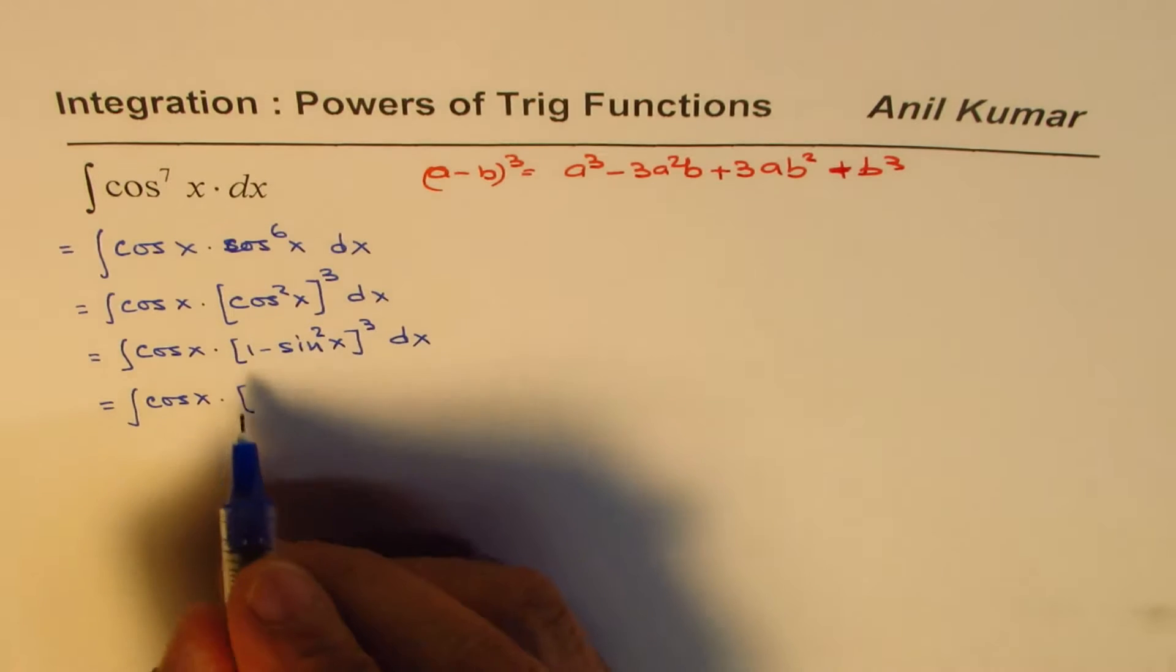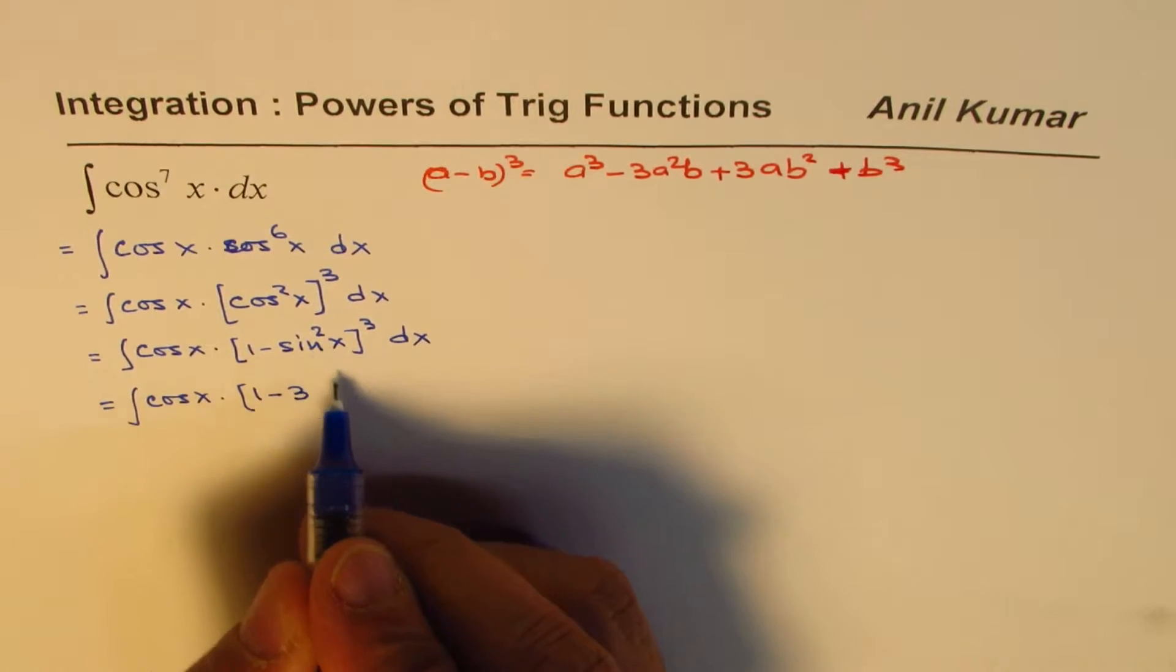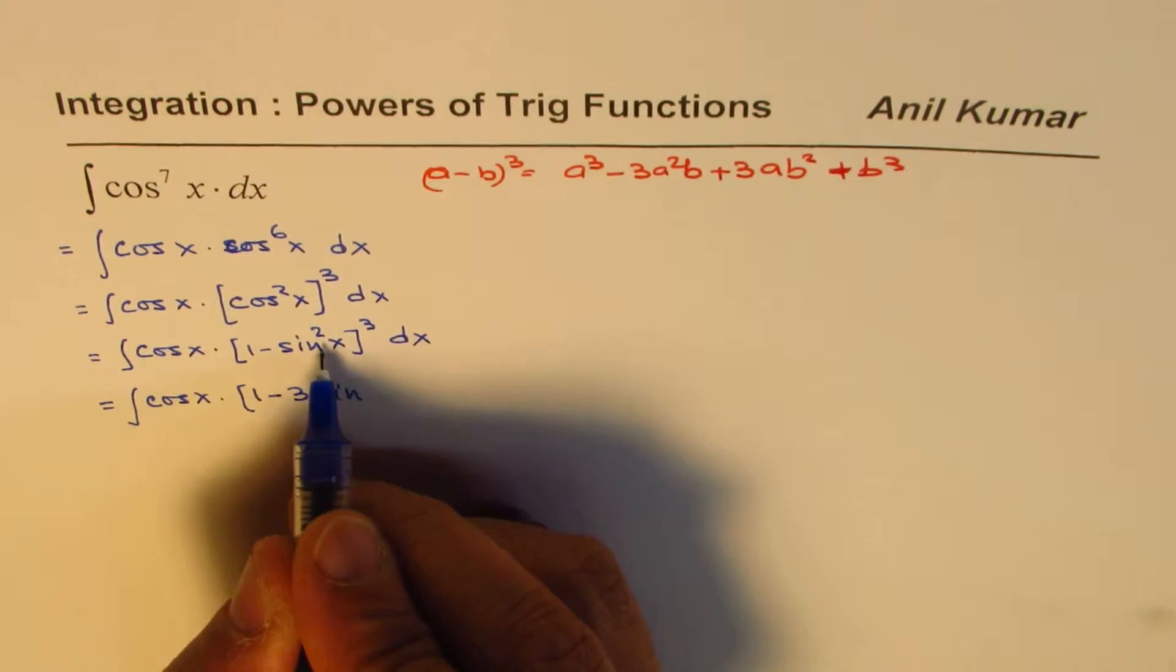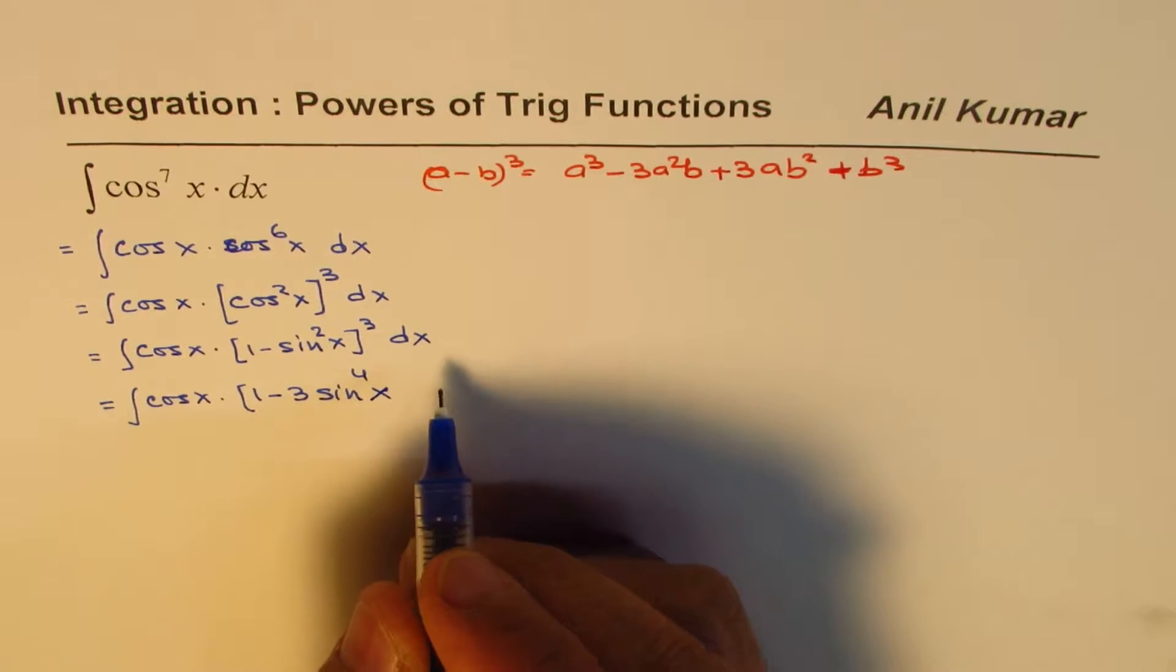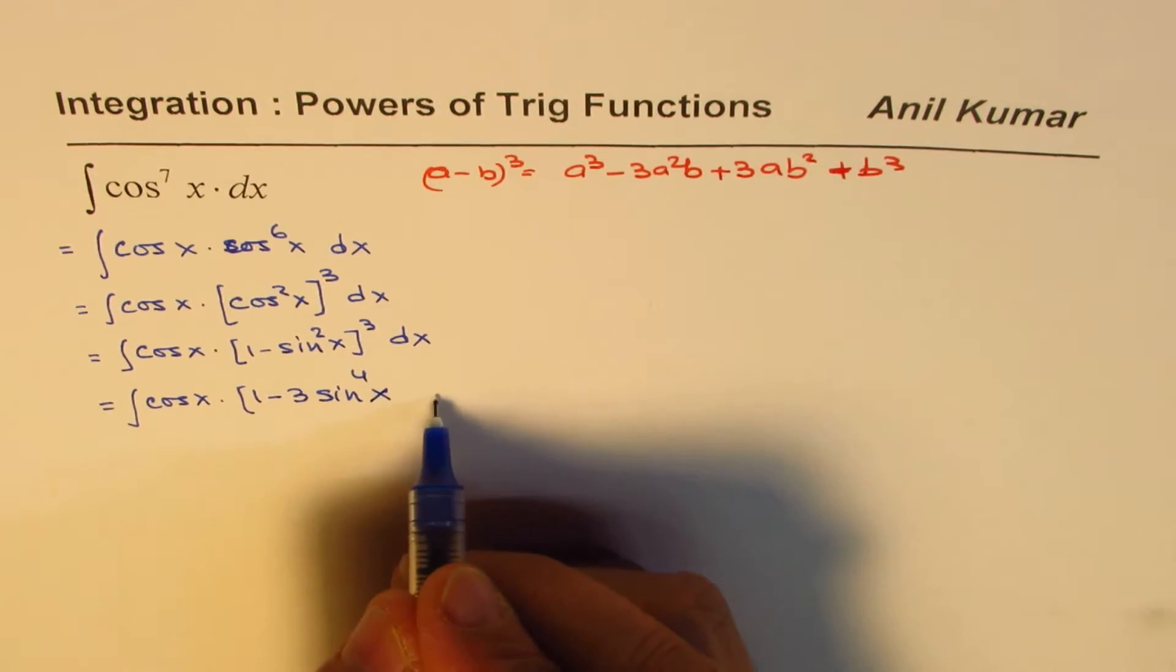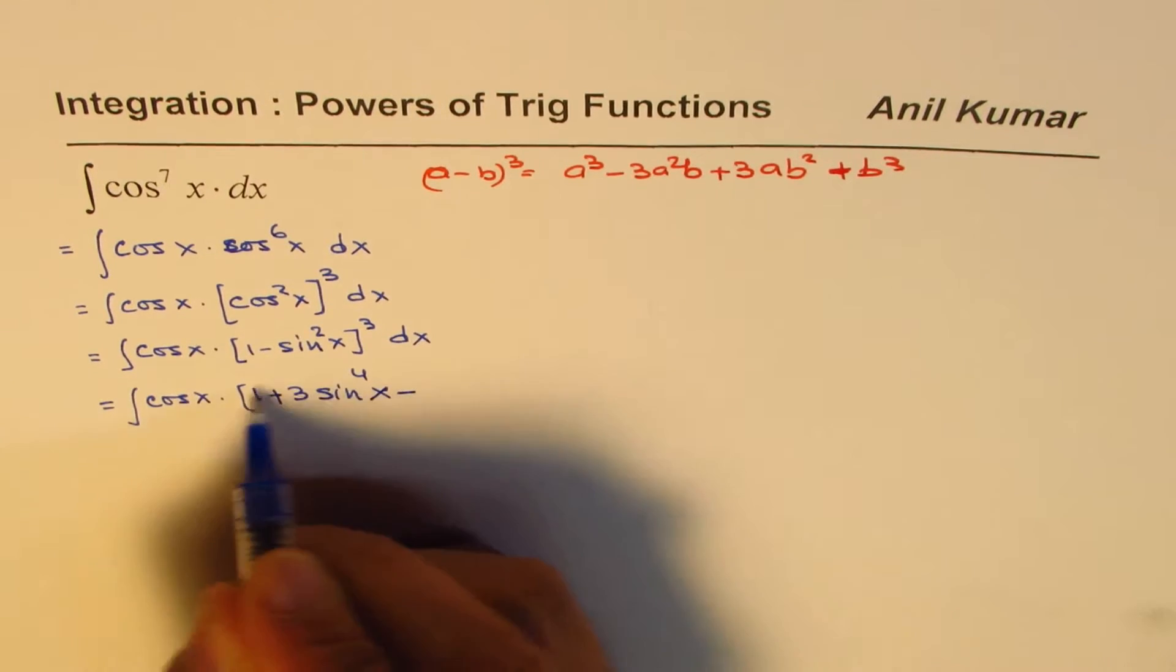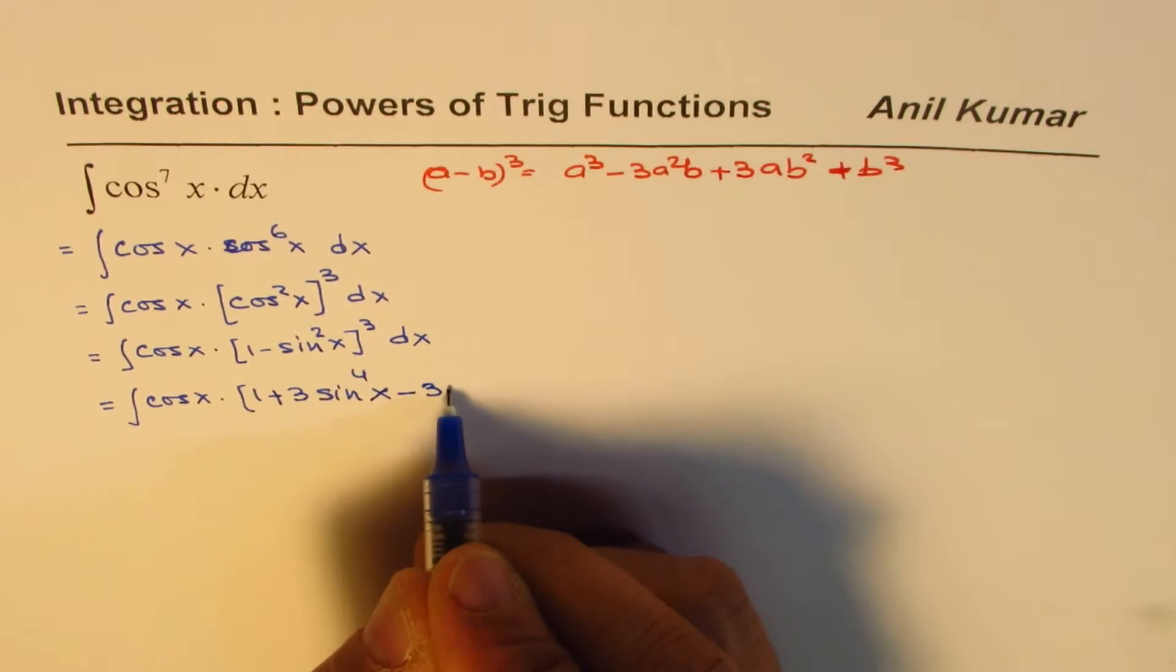So a is 1 for us. So 1 minus 3 times sine square x. Actually, let me make this positive. So it's 1 plus—I'll write this as minus 3 sine square x.